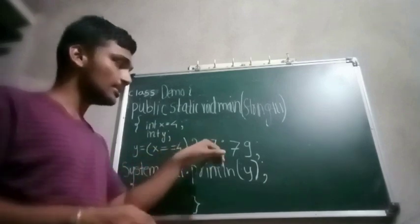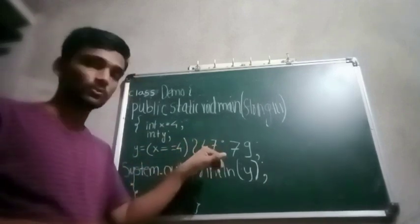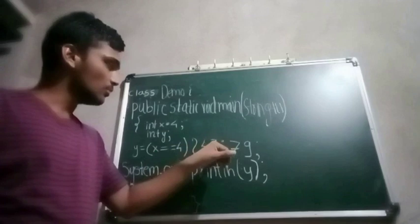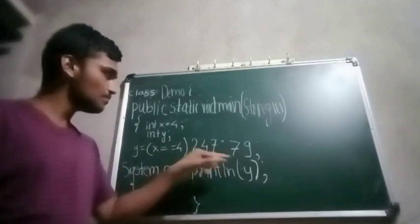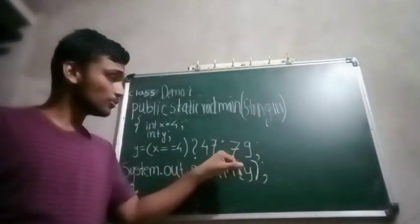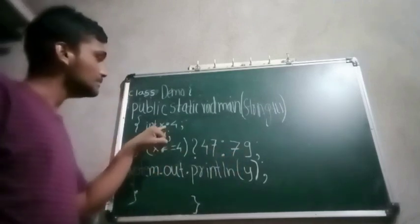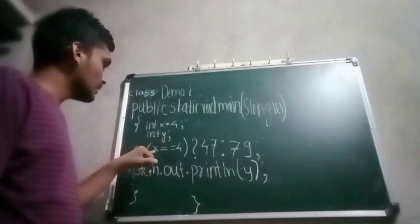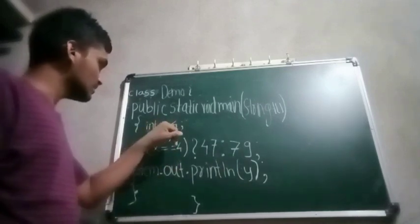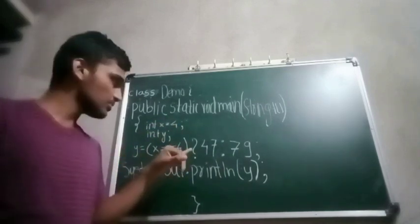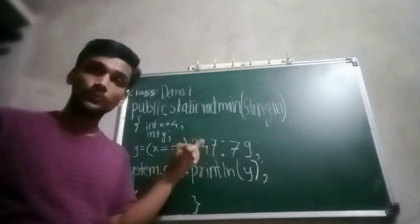It will execute this 47. Here is a colon. If this condition is false, then this block will be executed, that is 79. Since the condition is true (x == 4), it will execute output as 47.